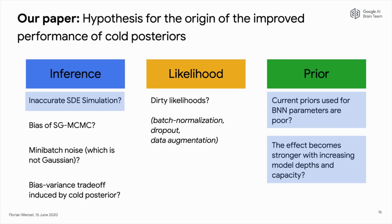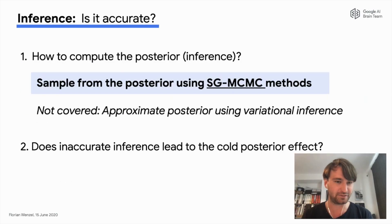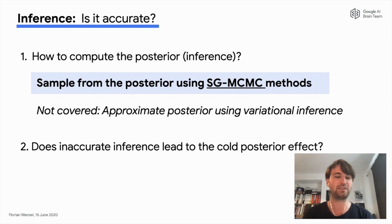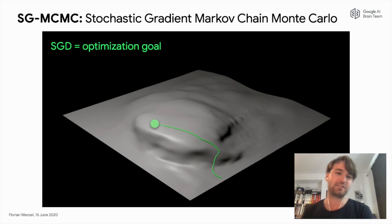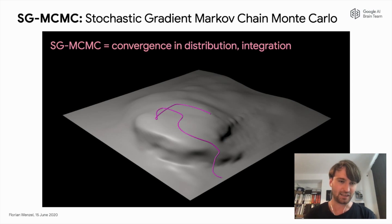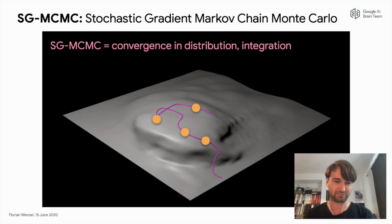Is the inference accurate enough? In this paper, we use Stochastic Gradient Markov Chain Monte Carlo methods, because they typically perform best among all scalable inference methods. In SGD, Stochastic Gradient Descent, we just optimize a loss function and then get a single point estimate. In SGMCMC, however, we converge in distribution to the posterior. If we collect samples along the SGMCMC trajectory, we know those samples will asymptotically come from the true posterior.